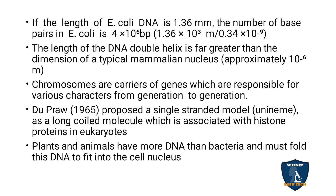Dupro in 1965 proposed the single-stranded model of unineme — a long coiled structure with histone proteins in eukaryotes. Plants and animals have more DNA compared to bacterial cells. The bacterial cell DNA is circular, but eukaryotes — higher organisms like plants and animals — have linear DNA material and more DNA compared to bacteria.